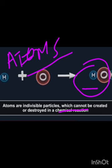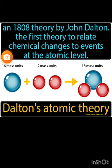It was presented by John Dalton, the first to relate chemical changes to events at the atomic level. John Dalton proposed the atomic theory in reference to chemical changes at the atomic level. Here we can see one atom which has a mass of 16 atomic mass units.